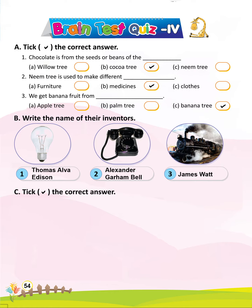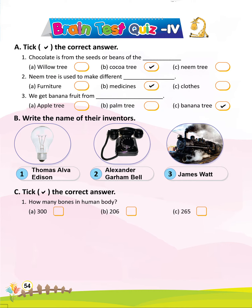Take the correct answer. 1. How many bones in the human body? B. 206.